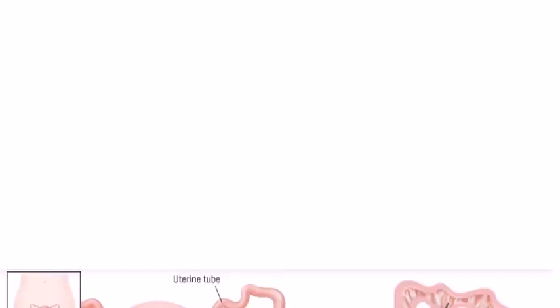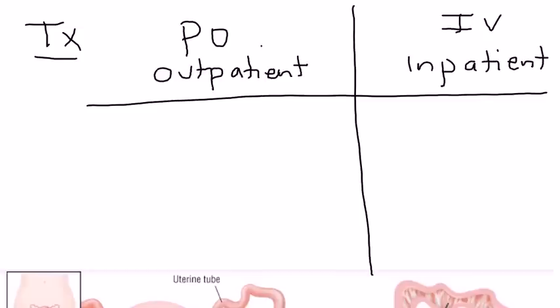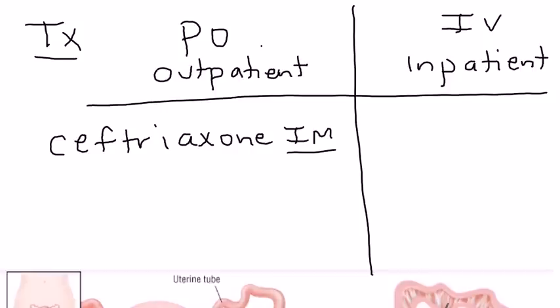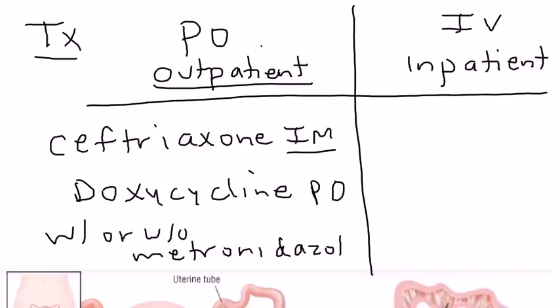The treatment of PID most commonly is oral and outpatient — meaning you give the patient antibiotics. The outpatient antibiotic regimen is very well-known: ceftriaxone given as a shot in the clinic, plus doxycycline — this is very common — with or without metronidazole. Metronidazole is sometimes added to cover other organisms like Trichomonas that can be causative.